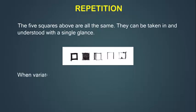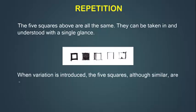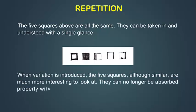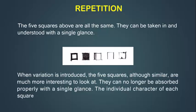When variation is introduced, the five squares, although similar, are much more interesting to look at. They can no longer be observed properly with a single glance. The individual character of each square needs to be considered.